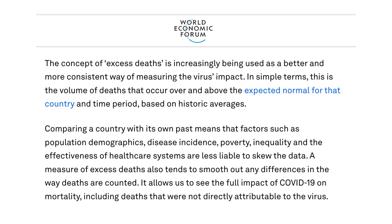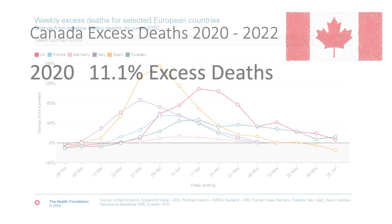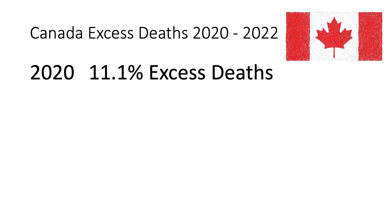According to the WEF website, in simple terms, excess deaths are the volume of deaths that occur over and above the expected normal for a given country for a given time period based on historic averages. This article published by the WEF in July 2020 included a chart showing how weekly excess deaths spiked in several European countries in the first half of 2020 due to reasons. So based on the unexpected events that spread to North America in early 2020,